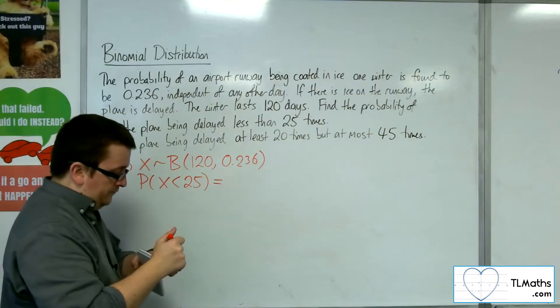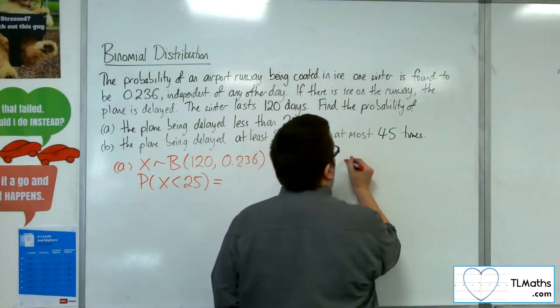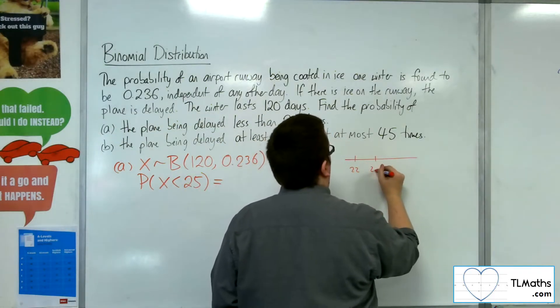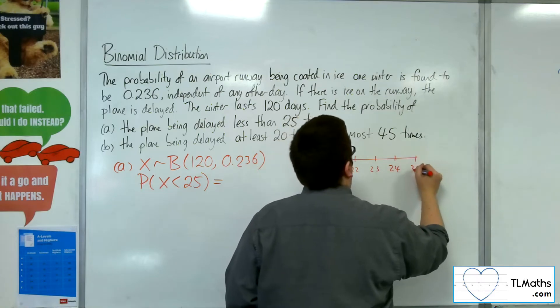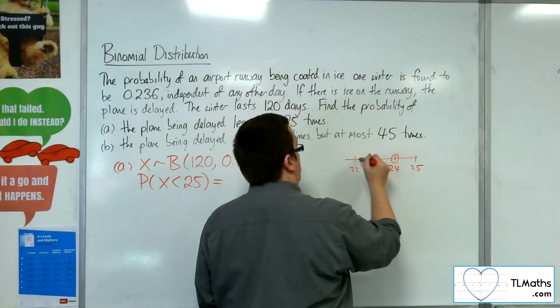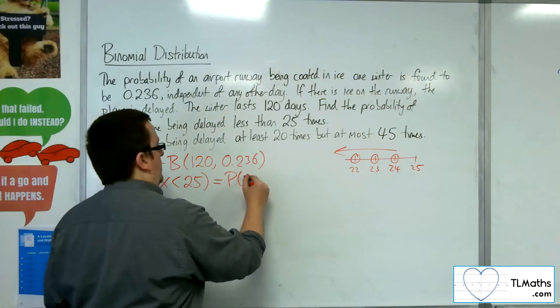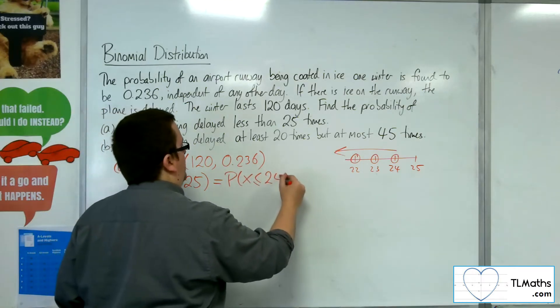Okay, so less than 25, if we think of this as a number line, I'm not going to draw it all, obviously. 22, 23, 24, 25. So less than 25 will be 24, 23, 22, and all the way down. So this is the same as less than or equal to 24.